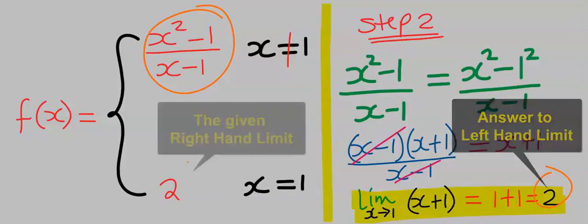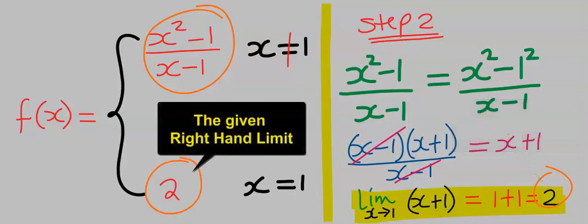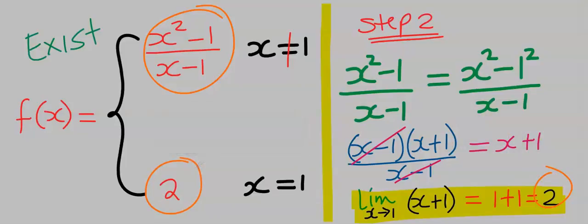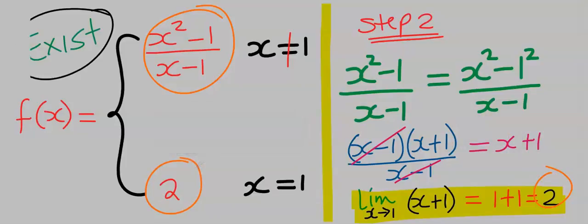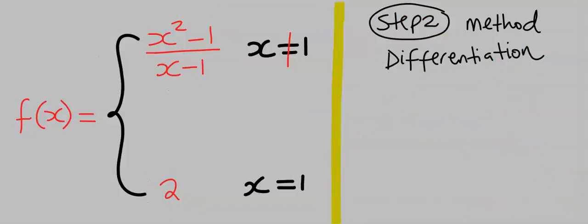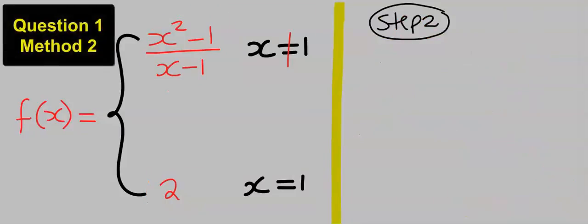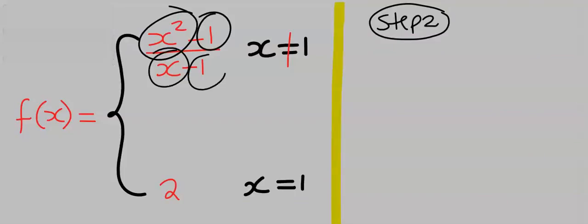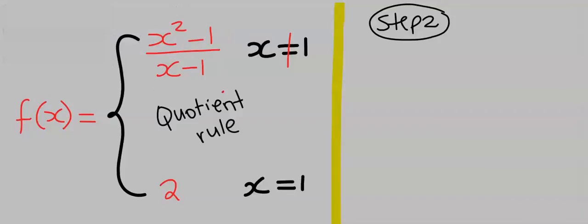Likewise, the lower arm, which is the right-hand limit, also has 2. This means that this limit exists. We can apply another method by using differentiation. By using L'Hôpital's rule, we are going to differentiate each variable independently. Never think of the quotient rule here — it doesn't apply.